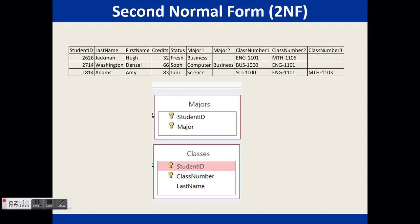Second normal form includes first normal form, and non-key fields must be fully functionally dependent on the primary key. This will only affect tables with composite keys, where a composite key is a key with multiple fields. If a field in a table does not depend on all parts of a composite key, the table can be broken down further.